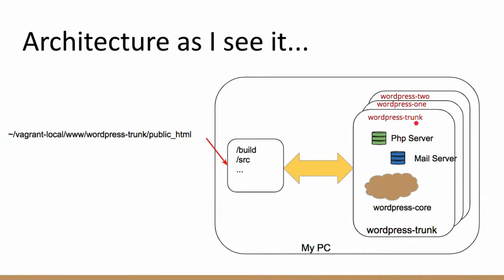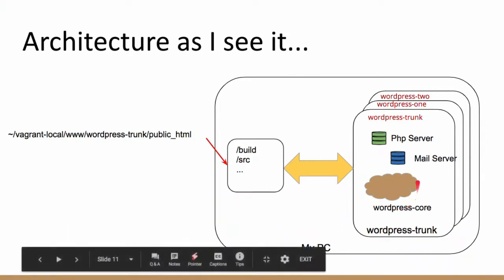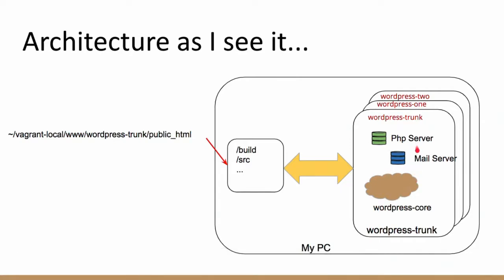The build folder powers different virtual environments. I pointed you to trunk, and there are also environments one and two — so VVV spins up three different installations, but we'll focus on trunk. Within trunk there's the cloud of WordPress core code, and then there's the PHP server and the mail server, which I'll help you understand throughout this presentation.